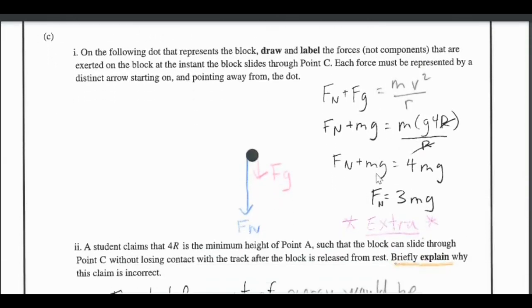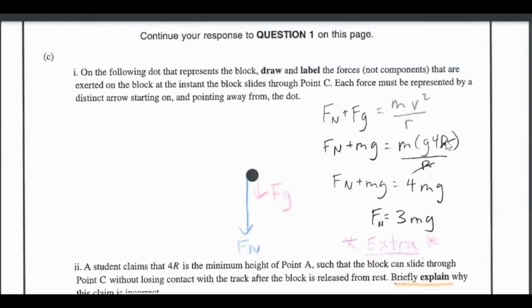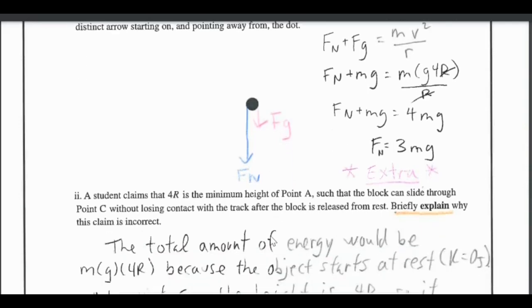It's the square root of g(4R) so if you take v squared it basically just removes the root and then you have g(4R). Then our r's cancel, we have Fn plus mg equals 4mg and then that would be the normal force is 3mg which means that my vector for Fn should be larger. But again the question didn't specify and ask for the relative size of the vectors to be proportional to the amount of force so I don't think they're going to be grading that.